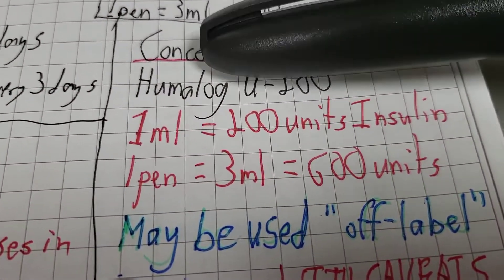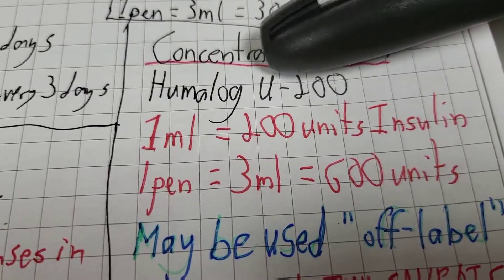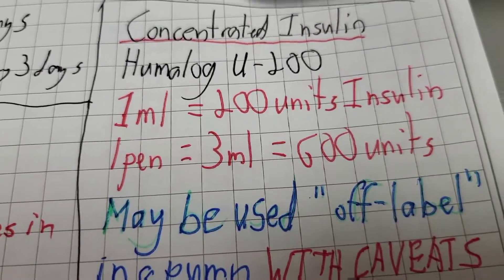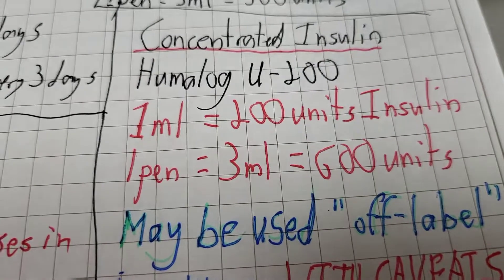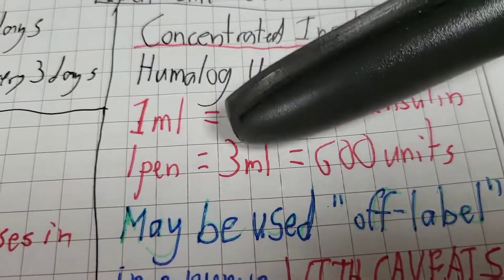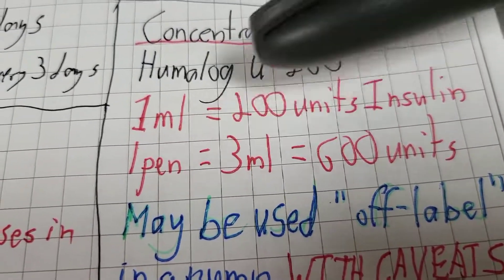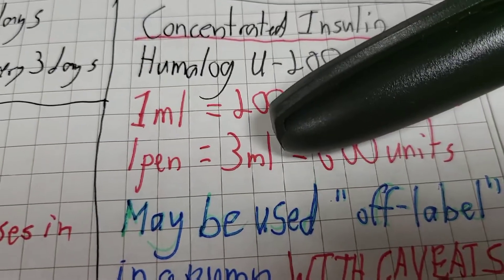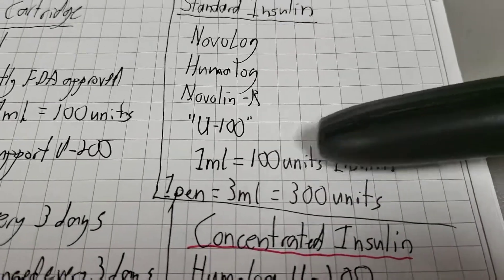Concentrated insulin, U200. In the US, Humalog U200 is the only brand. One milliliter contains 200 units. One pen, again, still contains three milliliters, but those three milliliters represent 600 units, not 300 units.